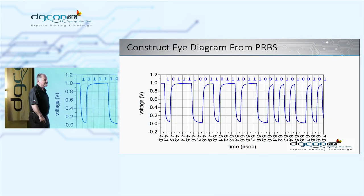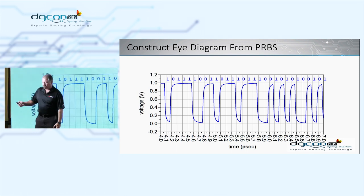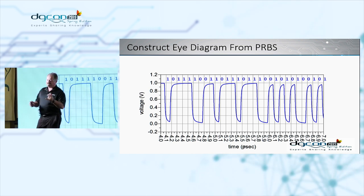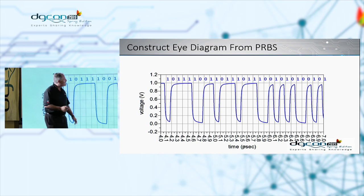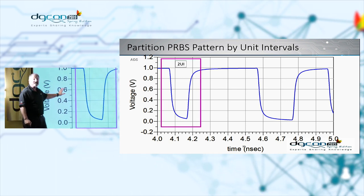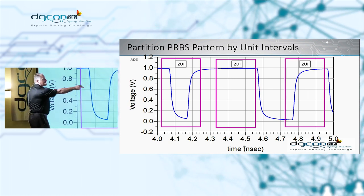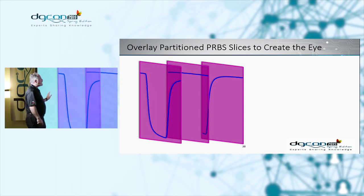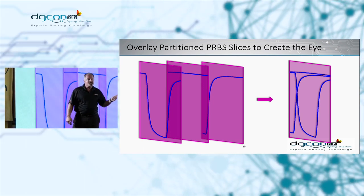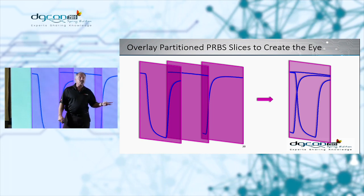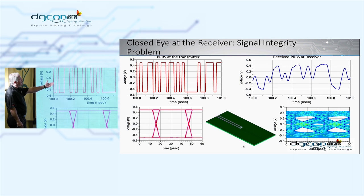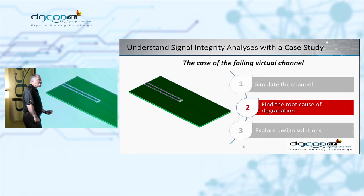When we construct eye diagrams from PRBS, rather than go into theory, I want to give you intuitive understanding. If we look at the bit train that the receiver sees, we take two unit-interval slices and slice the bit train for the full length of the pattern, then lay them on top of each other — we get the eye diagram. This is true for either equivalent-time sampling oscilloscopes or real-time oscilloscopes. So if we look at the receiver, we're going to have something that's not very clean, and we need to figure out what's causing this degradation.